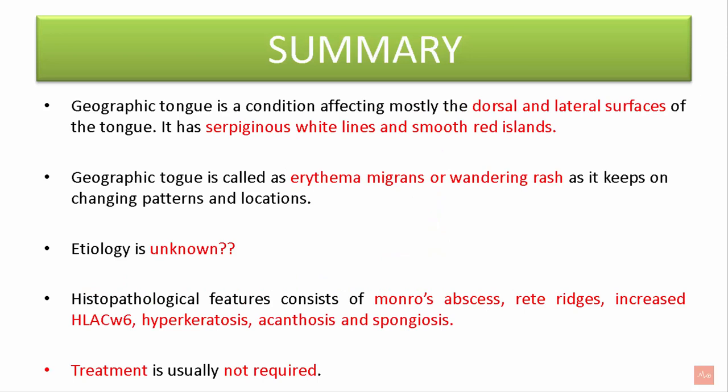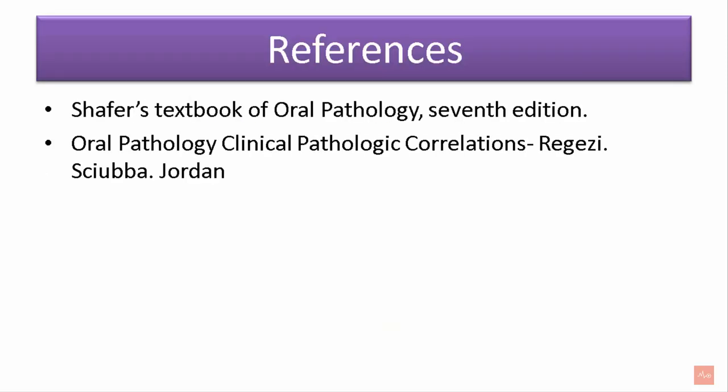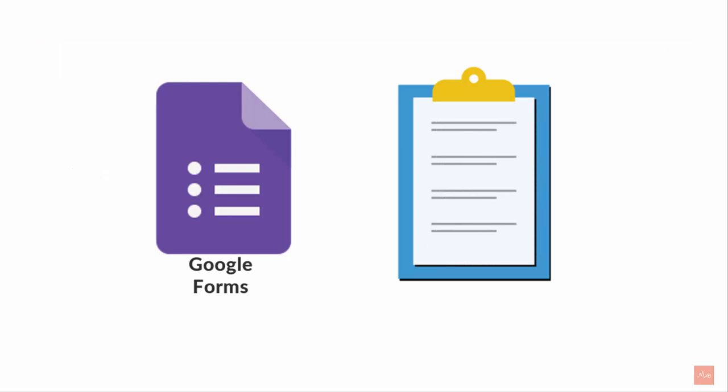In summary: Geographic tongue is a condition affecting mostly the dorsal and lateral surfaces of the tongue. It has serpiginous white lines and smooth red islands. It is called erythema migrans or wandering rash as it keeps on changing patterns and location. Etiology is unknown. Histopathological features consist of Munro abscesses, rete ridges, increased human leukocyte antigens, hyperkeratosis, acanthosis, and spongiosis. Treatment is usually not required. MCQs related to this topic are available via the linked Google Form.